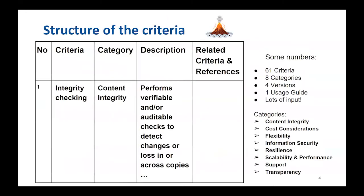As with the Levels of Digital Preservation, which also came from the NDSA, the list of criteria is presented in a spreadsheet format. The current version on the OSF website is version 3 and has 61 criteria. The first criterion shown as an example is integrity checking. It's intended, like the levels, to be relatively easy to scan and use.